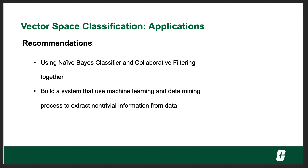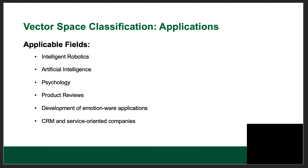In imbalanced classification, the recommendation is using Naive Bayes classifier and collaborative filtering together to build a system that uses machine learning and data mining processes to extract non-trivial information from data.